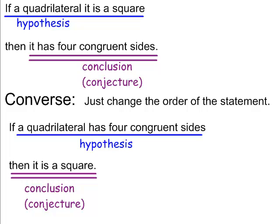Now we're going to talk about a converse. The converse is when you switch the order of the hypothesis and the conclusion. The original statement is: if a quadrilateral is a square, then it has four congruent sides. The converse swaps the position of the hypothesis and the conclusion — so now it's: if a quadrilateral has four congruent sides, then it is a square. Is that a true statement? Sometimes converses are true and sometimes they're not.